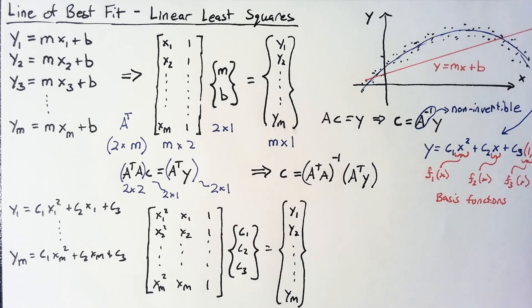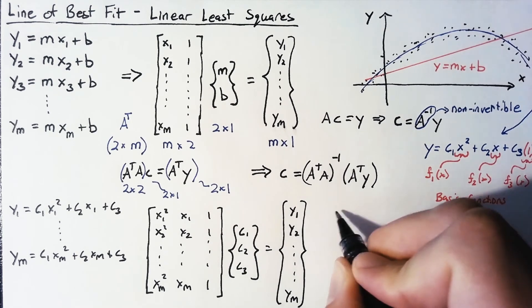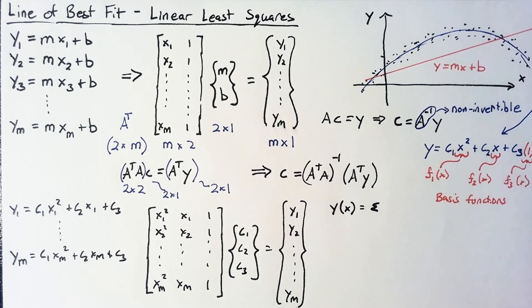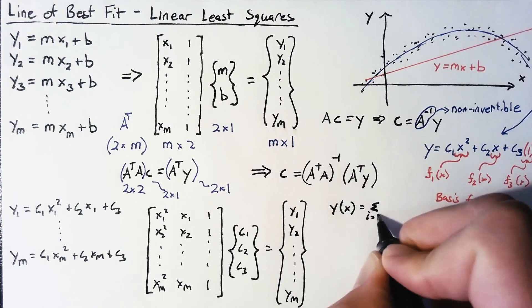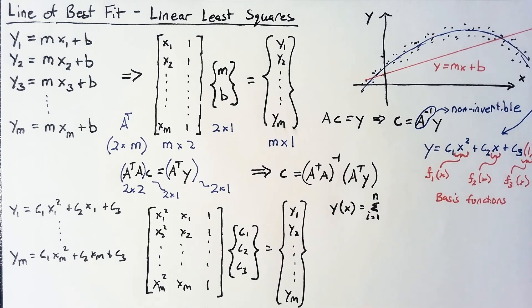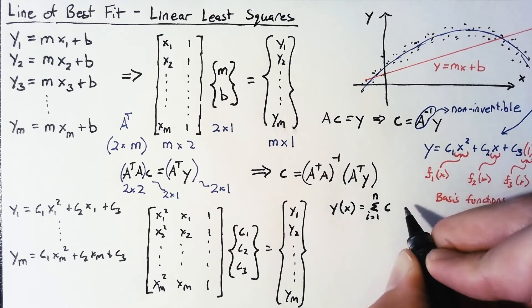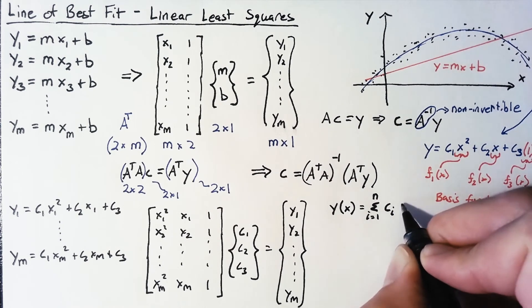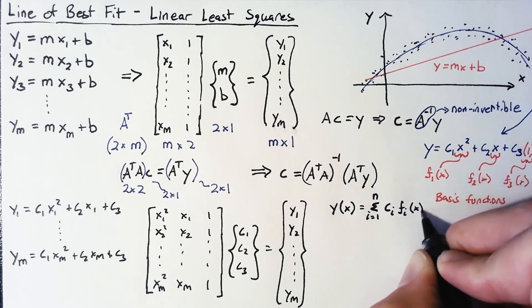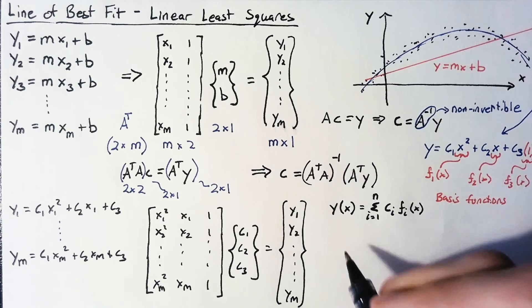So now that we've stepped up to three separate parameters, let's go ahead and do the most general form. So we're going to say that our basis functions are going to be a sum of i is equal to 1 all the way to n. So we have a completely general number of basis functions. And the way that we write this is say that Ci multiplied by our basis function Fi of X.